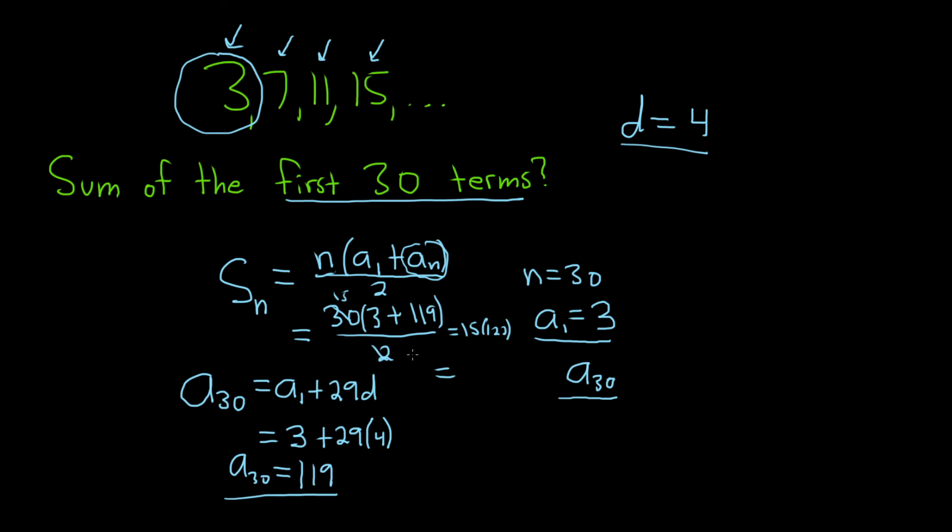I'm definitely going to use the calculator for this, so 15 times 122, I got 1,830. So this should be the sum of the first 30 terms. I hope this video has been helpful, good luck.